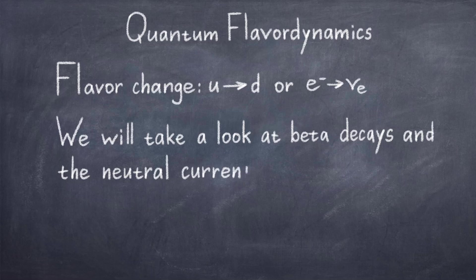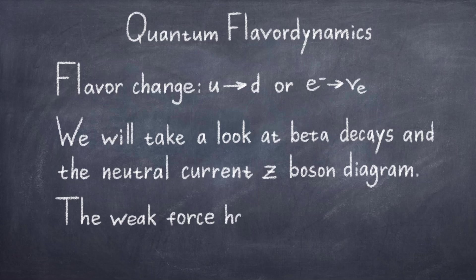In this video we will take a closer look at the processes caused by the weak force, such as the very important beta decays, and the neutral current diagram which led to the discovery of the Z boson. We will also discuss why the range of this force is so short, and the fact that the range is so short is also why we can't really experience it in the same way as the electromagnetic force or gravity, which technically have infinite ranges.